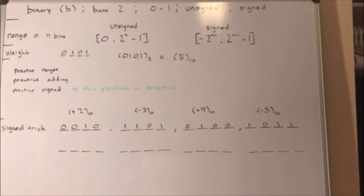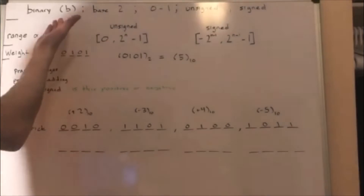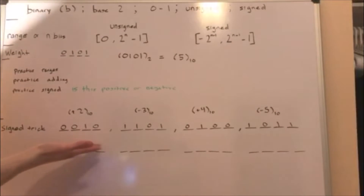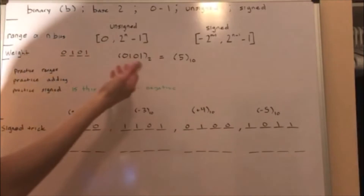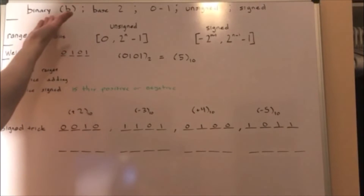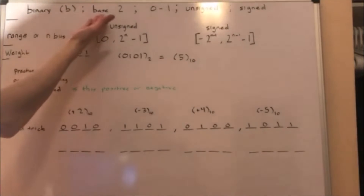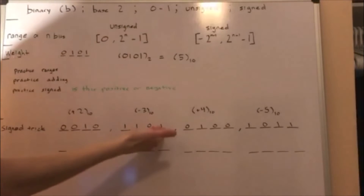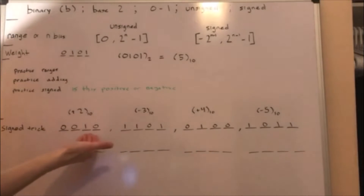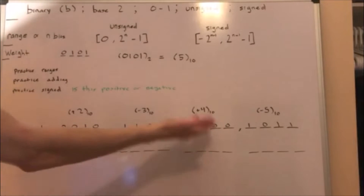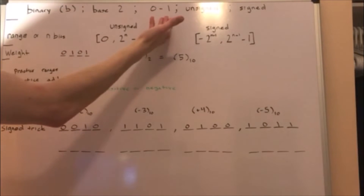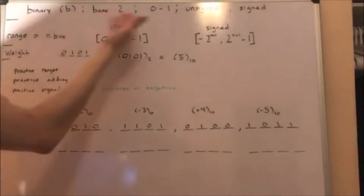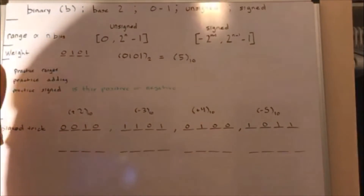I'm going to be explaining binary numbers. Here are some examples of binary numbers. Binary numbers are base 2. Every digit in a binary number can either be a 0 or 1. And every binary number is either unsigned or signed.